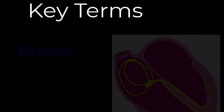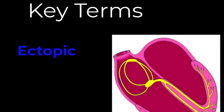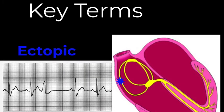The first term is ectopic, which means misplaced. We use that term to refer to any complex or pattern on the ECG that isn't where or when it should be occurring in a normal sinus rhythm. You can have isolated ectopic beats or ectopic pacemakers responsible for producing a rhythm.